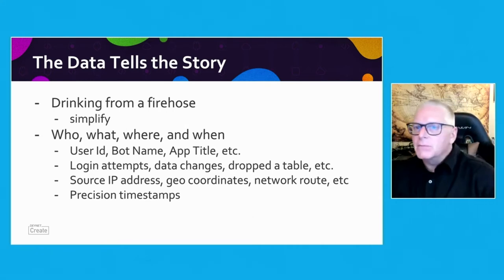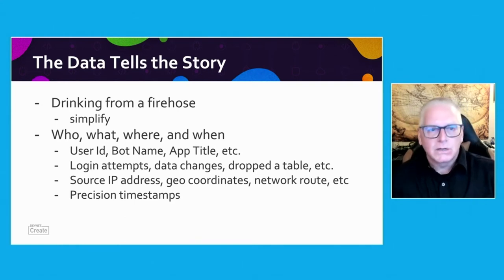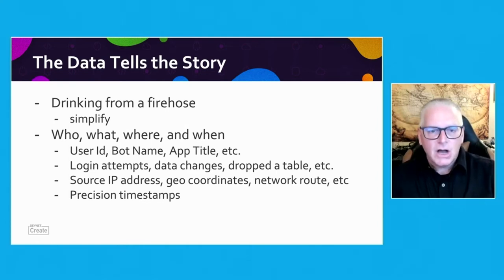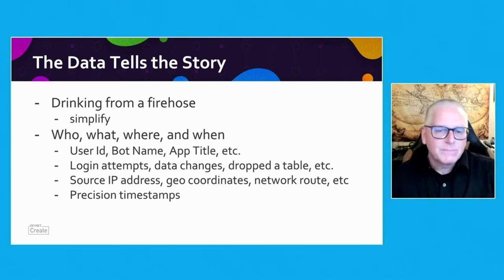We want to know where these are coming from — IP address, geodata, network segments. All of these can give us some very specific locations, not necessarily in a physical way, but in the context we want to see them in. Then of course the when — high precision timestamps, or even low precision depending on your use case.